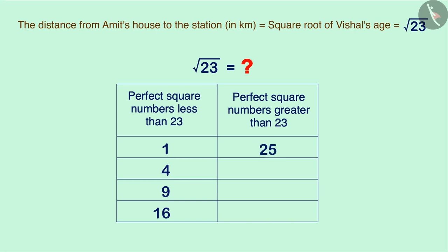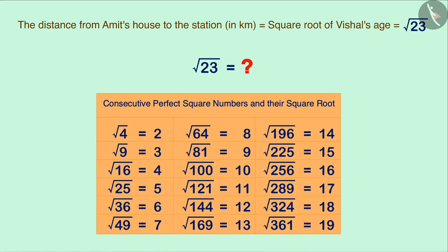If we make a list of these consecutive perfect square numbers and their square root, then we will obtain a table like this.